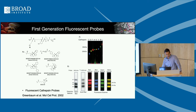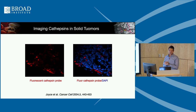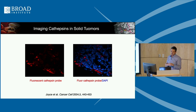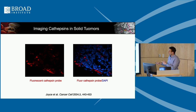I was right next door to Doug Hanahan's group at the time. A talented postdoc, Joanna Joyce — now at University of Lausanne — had finished transcript profiling in a spontaneous beta cell tumor in Doug's lab called the RIP-TAG model. These beta cell tumors would grow spontaneously in the pancreas, and transcript profiling found that one of the biggest upregulated sets of signals was actually cathepsins. She came next door and asked if we could use our probes to look at these in the mouse.